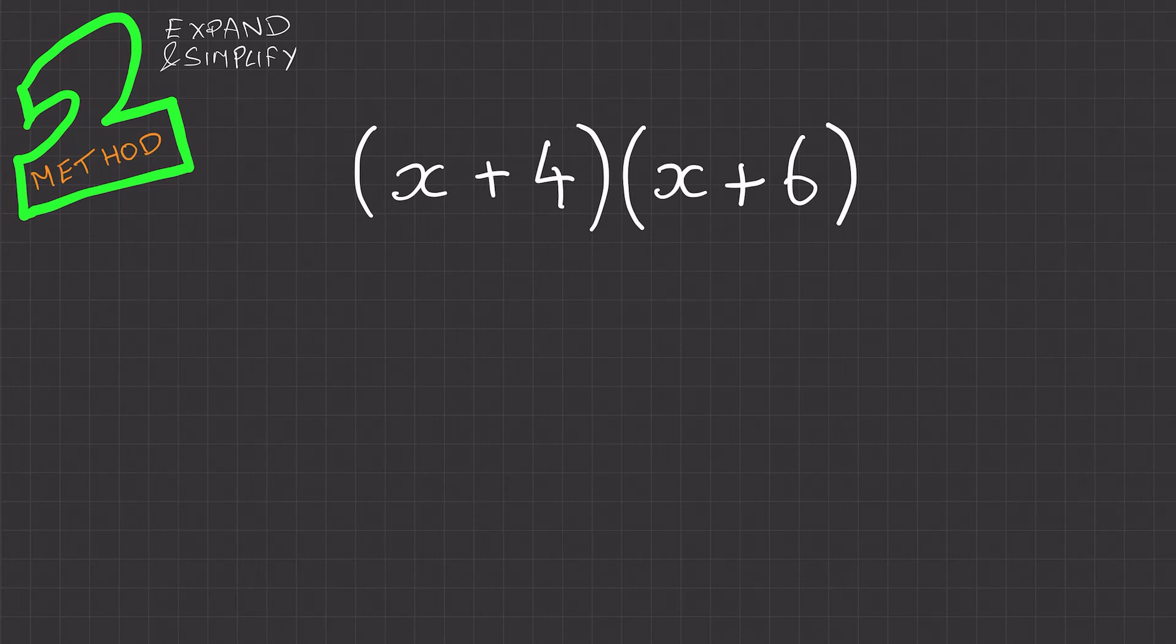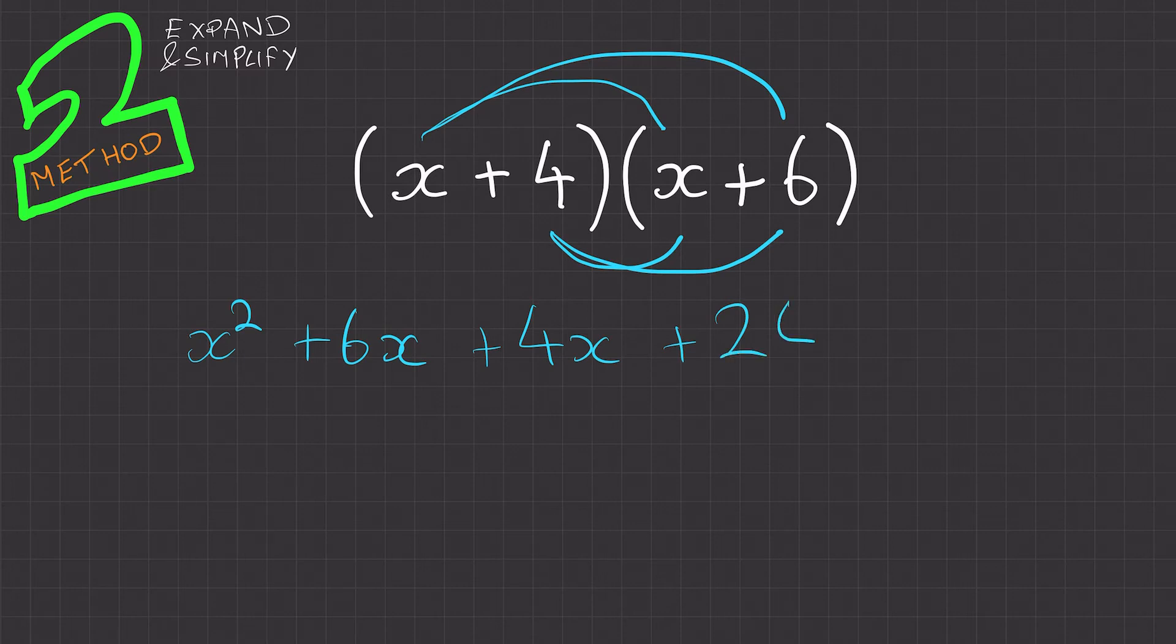The first one is called the claw. And it's called the claw because you're going to draw one claw which is x times x is x squared. The next claw which is x times 6 which is 6x. Then we've got the next claw which is 4 times x which is 4x. And the final claw which is 4 times 6 which is 24. At this point we can simplify the expression which is x squared plus 10x plus 24.